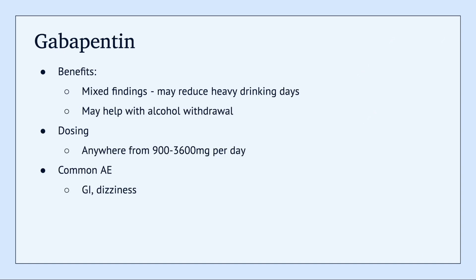Gabapentin is the last medication we'll talk about. Studies regarding gabapentin and alcohol use are mixed — some studies show that gabapentin has reduced heavy drinking days, and it can also help with alcohol withdrawal. Dosing can be anywhere from 900 to 3,600 mg per day. The good thing about gabapentin is that it can be used for a number of different conditions, so if a patient has multiple issues, this could potentially help with those other ones as well.